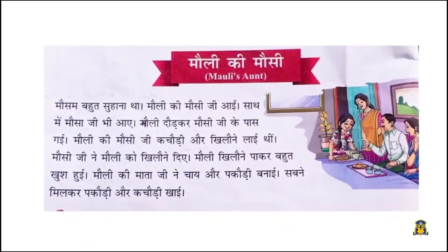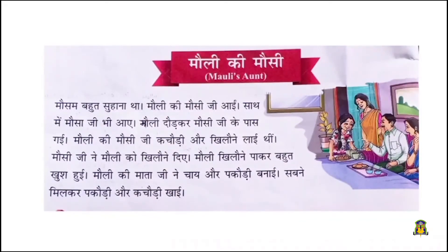Mauli ki mausi ji aayi — Mauli's aunt came. Mausi means aunt. Saath me mausa ji bhi aayi — mausa means uncle. Uncle also came with auntie. Mauli daud kar mausi ji ke paas gayi — Mauli ran and went to her aunt. Mauli's aunt had brought kachaudi and toys.